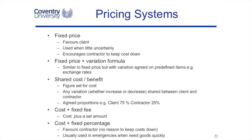This slide demonstrates five different pricing systems for contracts. At one extreme, a contract will be fixed price, whereas at the other extreme, a contract could be for all of the costs plus a percentage.